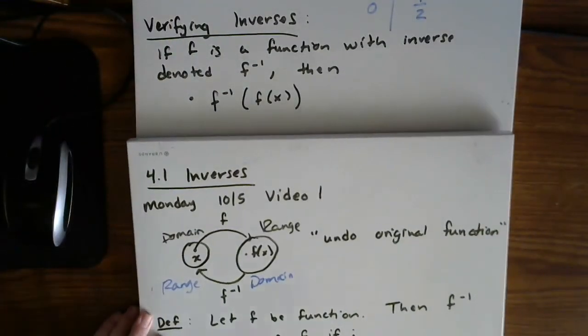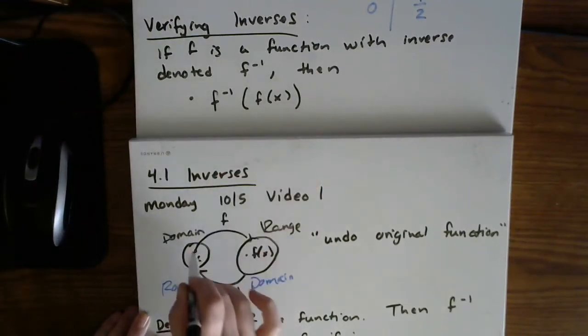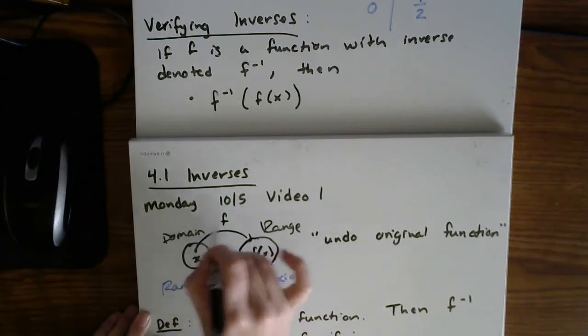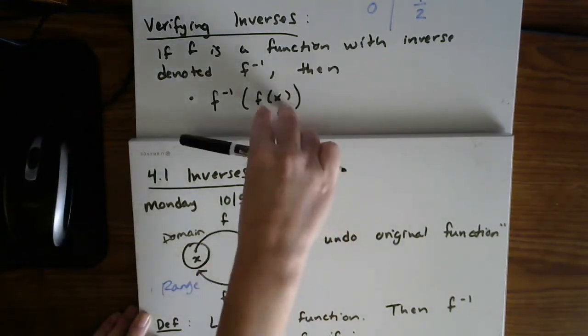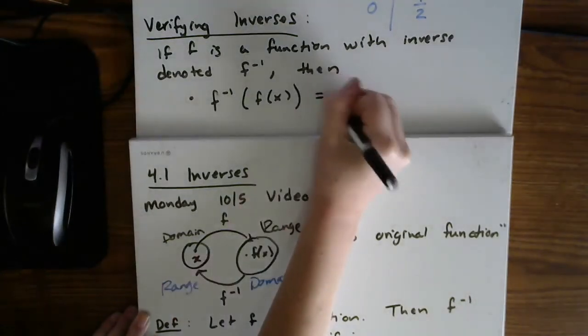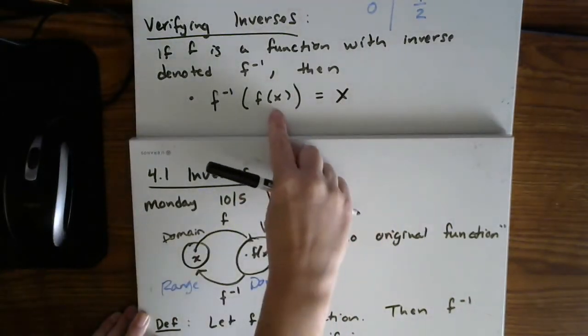So let's maybe look at our picture that I drew from before while we think about the notation here. So this notation says start with x, run it through the f function. That's the first part. And then go ahead and run it through the inverse.